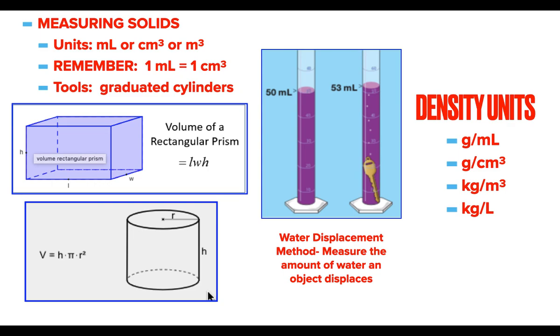For measuring solids, the units we're either going to use are milliliters, cubic centimeters, or cubic meters. One milliliter is equal to one cubic centimeter. So those units are equivalent to each other. Tools, graduated cylinders, and rulers or a meter stick. If I have a rectangular prism or a cube, length times width times height, and now you can see where those measurements come from. A cylinder, pi radius squared times height. Volume is a three-dimensional answer, so you need to make sure your answer is also in three dimensions.